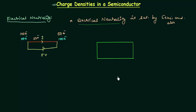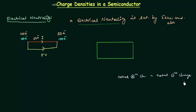The total positive charge is equal to the total negative charge — this is how we define electrical neutrality in semiconductors. If total positive charge is more than negative charge, the semiconductor is charged, and vice versa. So for electrical neutrality this condition must hold. We now add both n-type and p-type impurity materials, giving us positive donor ions and negative acceptor ions.